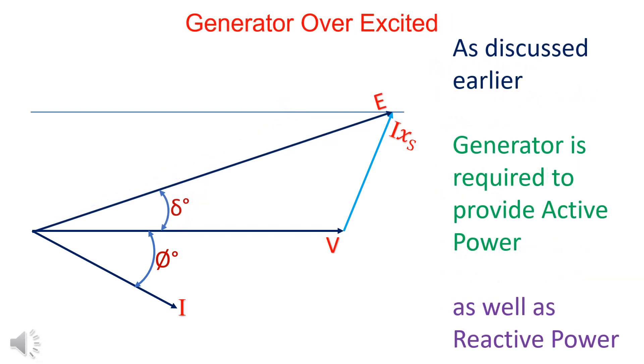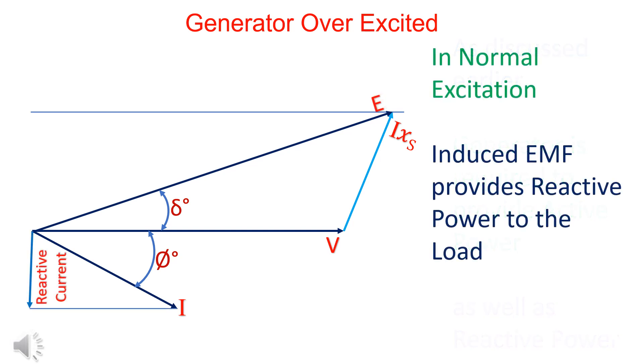As discussed earlier, the generator is supplying reactive power also. In case of the normal excitation, the generator caters to the reactive power of the load only.